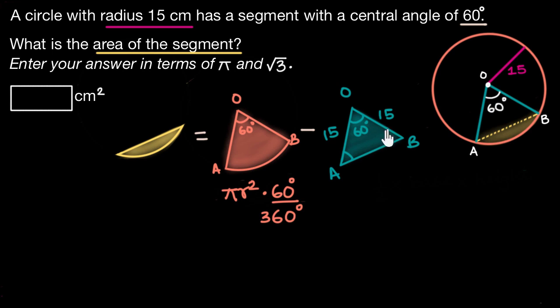So angle A should be equal to angle B and also as angle O is 60 degrees the sum of angle A and angle B would be equal to 180 degrees minus 60 degrees. So this is equal to 120 degrees and as angle A and angle B are equal each of these angles should measure 60 degrees each.